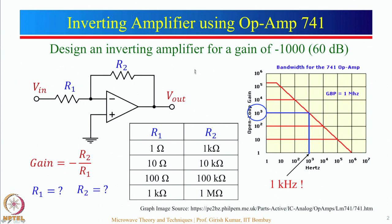An inverting amplifier configuration is shown here, where we can see that there is a feedback resistor R2 — in some books they write R_f — and here the resistor is R1. The gain of this particular amplifier is V_out divided by V_in, which is given by the expression minus R2 by R1.